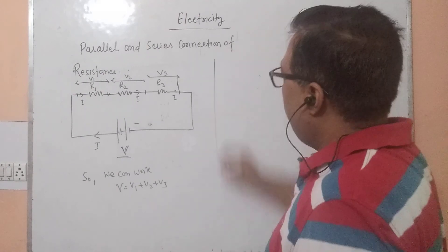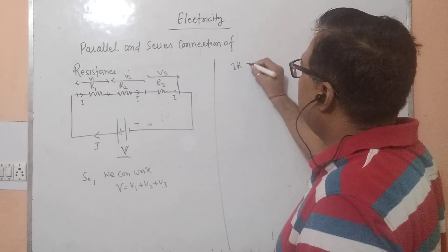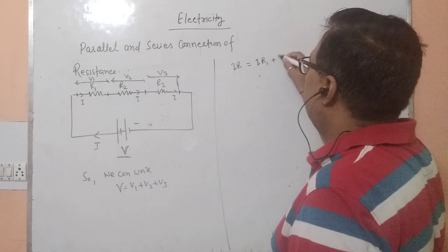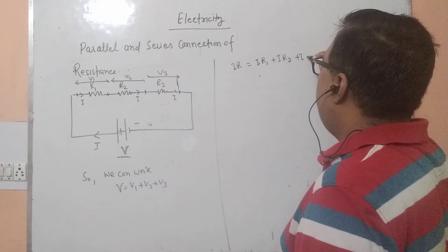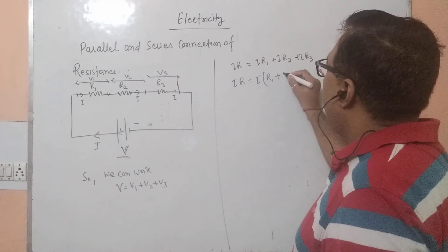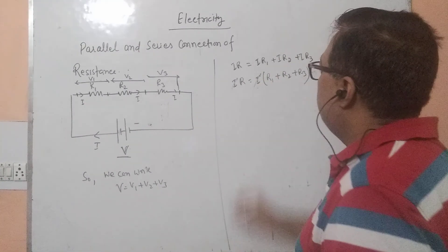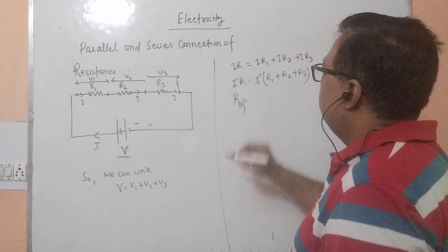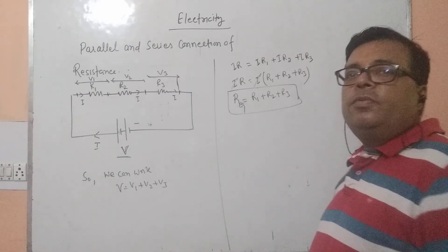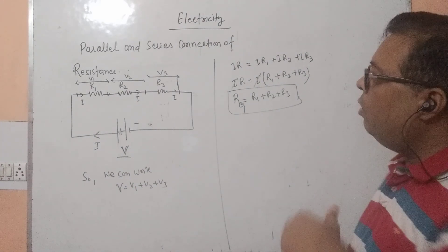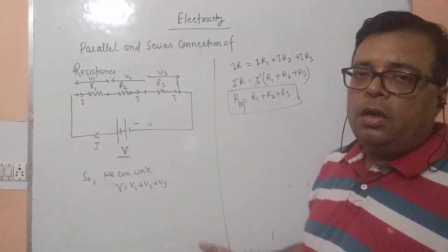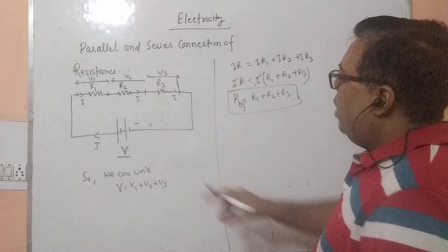At the place of V we can write I into R, at the place of V1 we write I into R1, at the place of V2 we write I into R2, and at the place of V3 we write I into R3. Taking I as common and cancelling it out, R_equivalent is equal to R1 plus R2 plus R3. In series connection, equivalent resistance is the algebraic sum of all given resistances — no matter how many resistances you have, you simply add them.